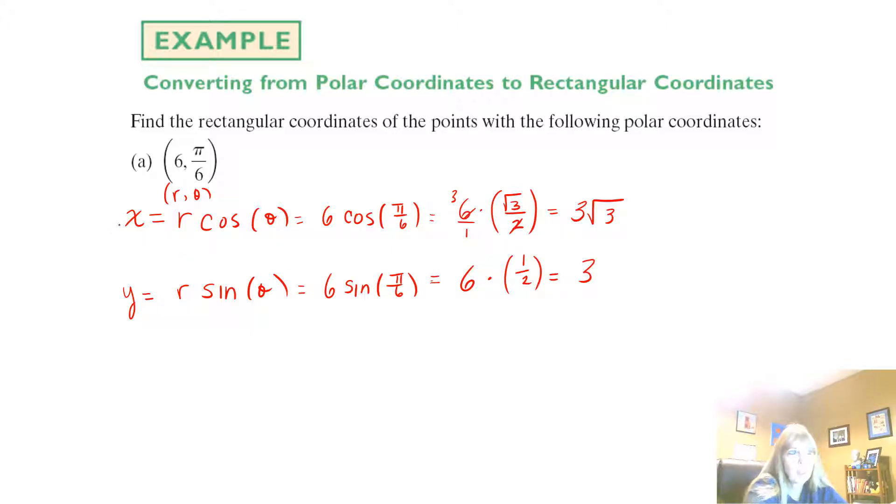So again, if this is xy, xy would equal 3 square root of 3 comma 3. So the rectangular coordinate of the polar coordinate 6 pi over 6 would be 3 square root of 3 comma 3.